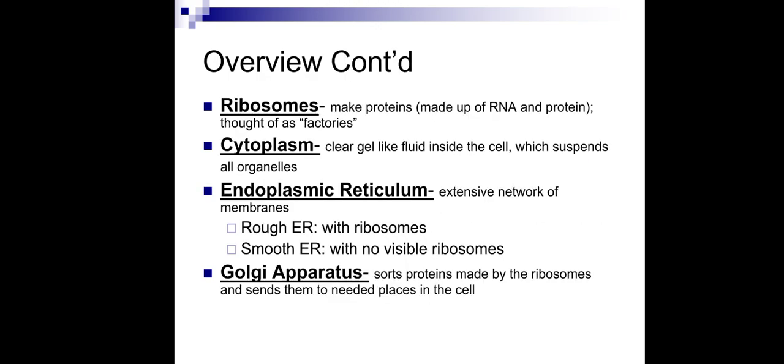The ribosome is another kind of cell organelle that makes protein. It is made up of RNA and protein and is known as the protein factory of the cell. Cytoplasm is the clear gel-like fluid inside a cell where all cell organelles are suspended.